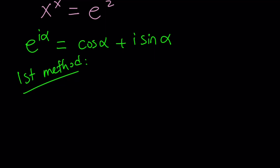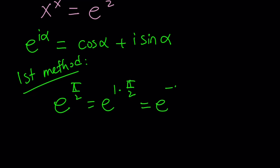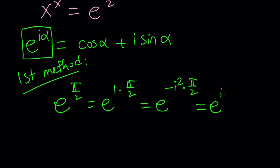For my first method, I'm going to start with e to the power pi over 2 and write it as e to the power 1 times pi over 2. The reason I separate the 1 is I want to write it in terms of i. Since i squared equals negative 1, then 1 equals negative i squared. So I can write this as e to the power negative i squared times pi over 2. Since our formula has e to the power i alpha, I can separate this as e to the power i times pi over 2, raised to the power negative i — because i times negative i is negative i squared. Make sense?